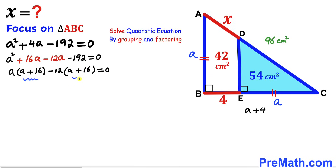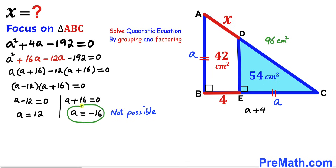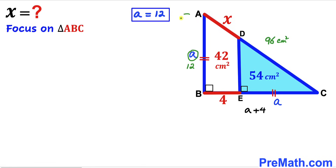Since (a plus 16) is common, we factor to get (a minus 12)(a plus 16) equals 0. Splitting the factors: a minus 12 equals 0 gives a equals 12, and a plus 16 equals 0 gives a equals negative 16. Since a represents a side length, we reject the negative value. Therefore a equals 12, meaning side AB is 12 centimeters and segment EC is also 12 centimeters.